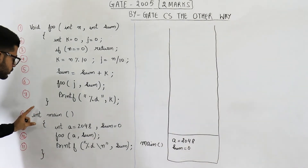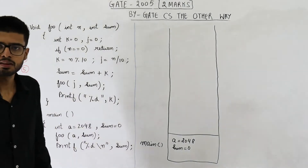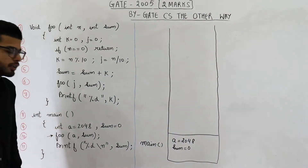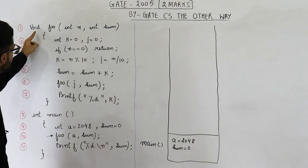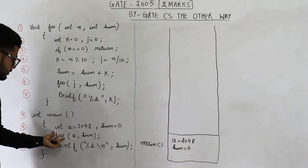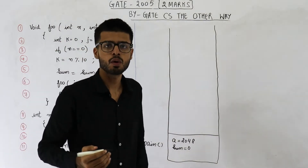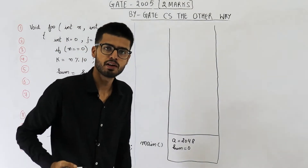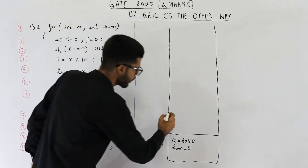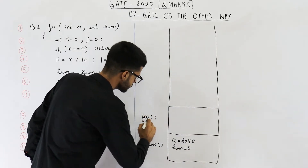To find the output, you just need to execute the main function. Main has only three lines — just execute these three lines and you will get the output. But the second line is a complex one. Just to execute this one line, you need to execute this entire code because this is a function call. For every function call, an activation record will be pushed onto the stack corresponding to that function — so corresponding to function foo, an activation record will be pushed.